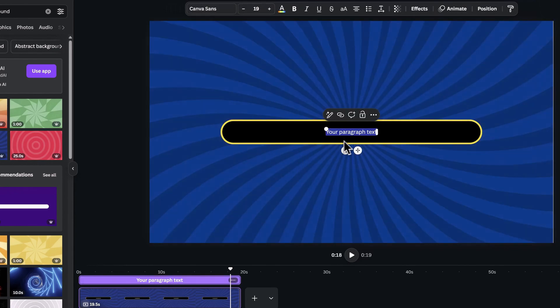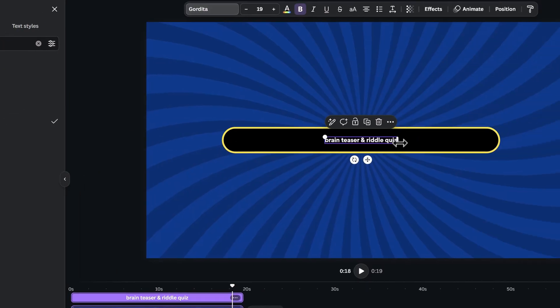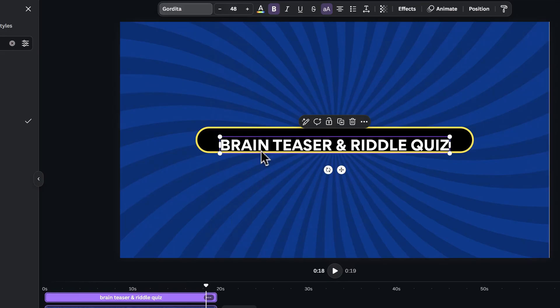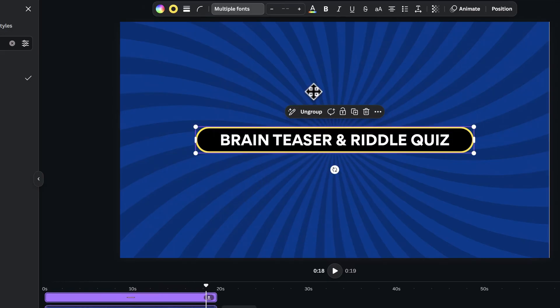Click on the corner rounding icon and increase it all the way up to 100. Add a text paragraph with the letter T, then click on the font library to search for Gordita font. Click on it, then click on the arrow toggle to choose the bold weight. Type a header in it, which in this case is brain teaser and riddle quiz. Click on the double A icon to make it uppercase, then change the font size to 48. Drag the text to the middle of the background and highlight to group them together, and move them to the top.